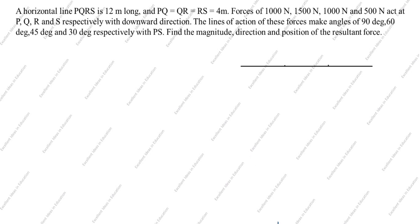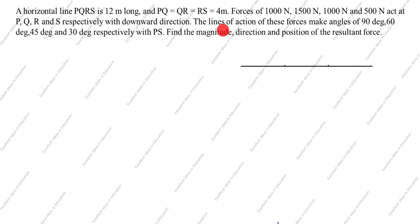Welcome to my channel Excellent Ideas in Education. Today we are going to solve this engineering mechanics problem. A horizontal line PQRS is 12 meters long, and PQ equals QR equals RS equals 4 meters, so equally divided. Forces of 1000 N, 1500 N, 1000 N, and 500 N act at P, Q, R, and S respectively in the downward direction. The line of action of these forces makes angles of 90°, 60°, 45°, and 30° respectively with PS.